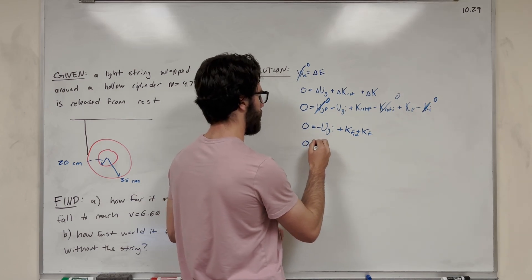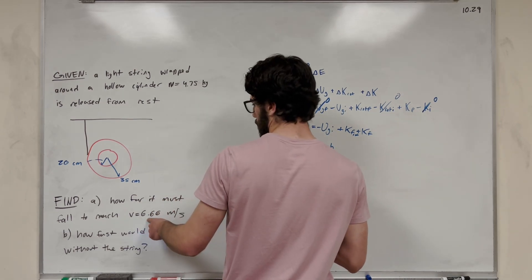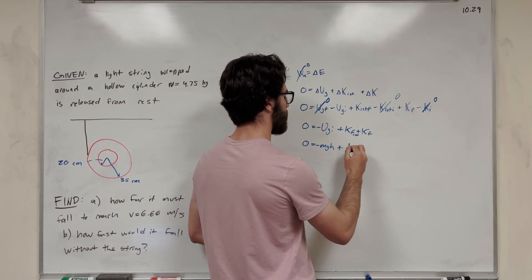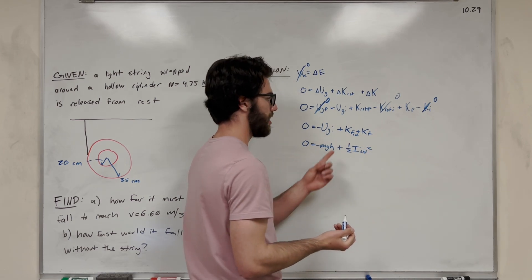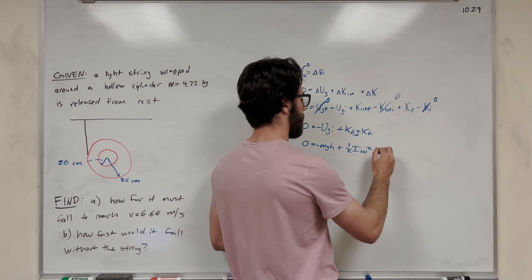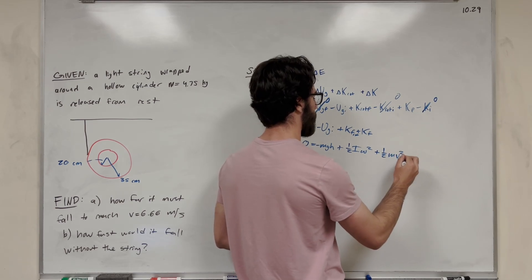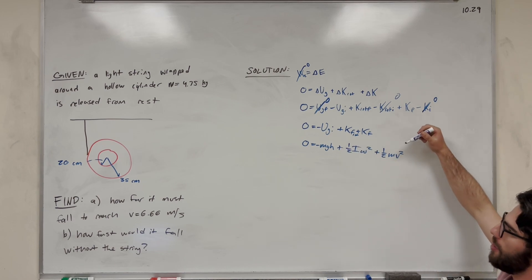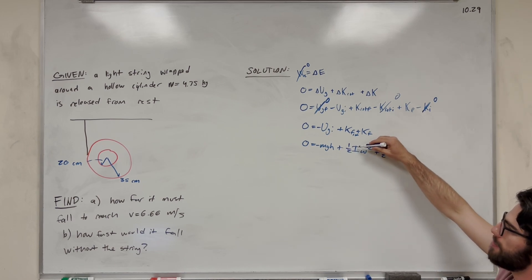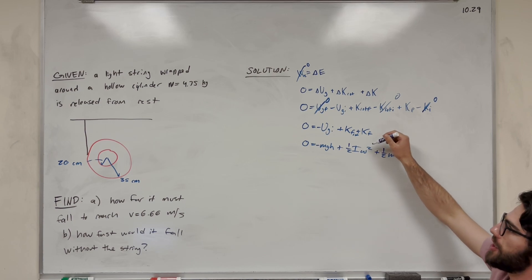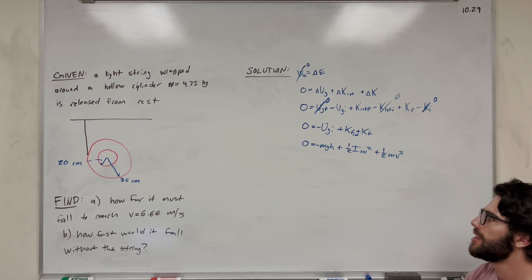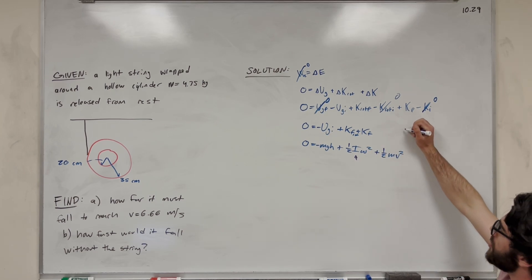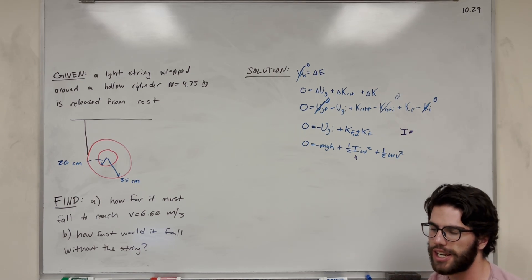So the equation becomes: zero equals negative UG-initial plus K-rotational-final plus K-linear-final. Let's expand these. Gravitational potential energy is mass times gravity times height — and height is what we're solving for. Rotational kinetic energy is one-half I times angular velocity squared. Linear kinetic energy is one-half mass times velocity squared. We know velocity final, but we need to find the moment of inertia I and the angular velocity.